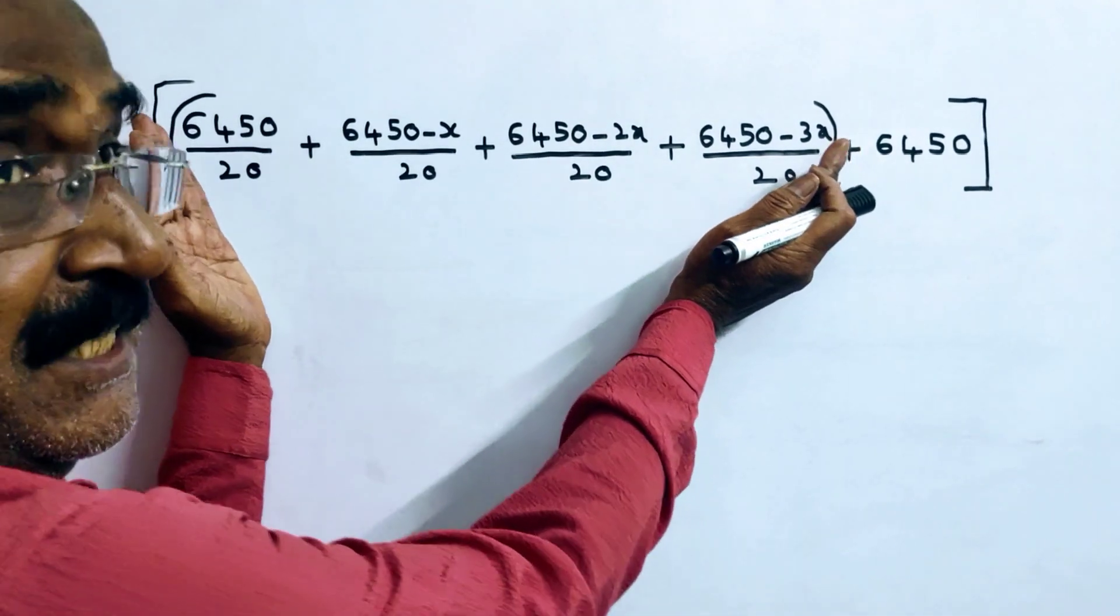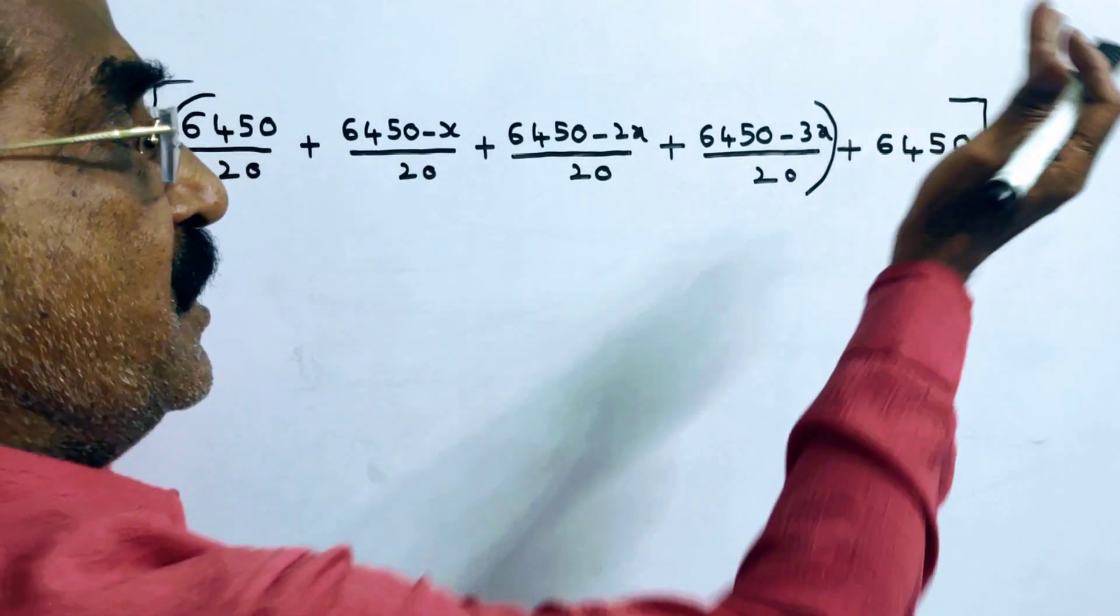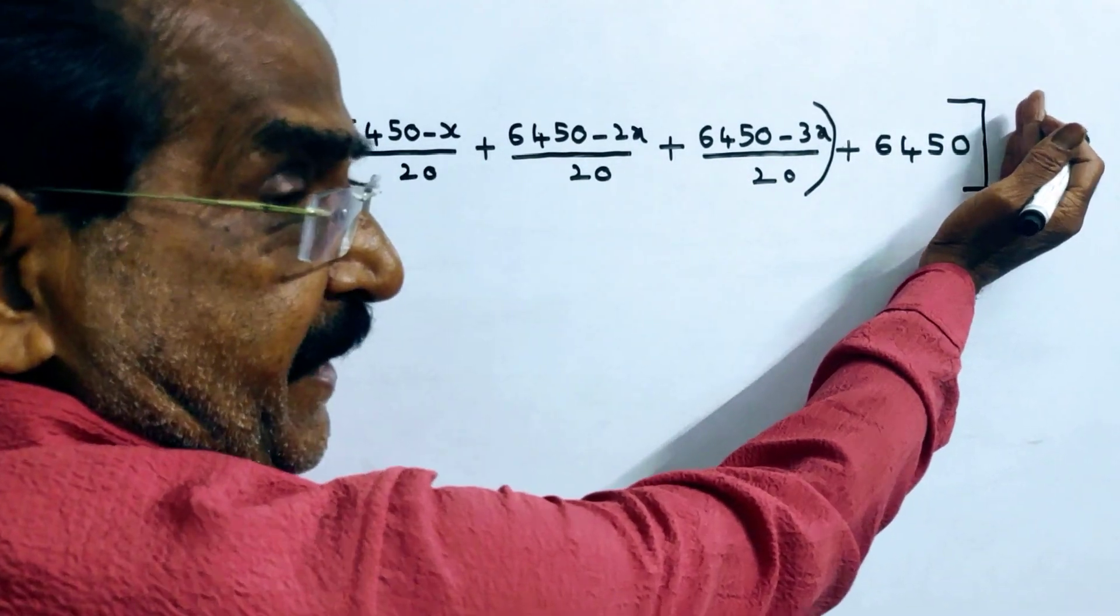This is the total interest accrued for the 4 years, plus the principal. So this is the total amount payable by Vikas.